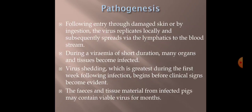Pathogenesis: following entry through damaged skin or ingestion — ingestion being the most important route — the virus replicates locally and subsequently spreads via lymphatics to the bloodstream. During a short viremia, many organs and tissues become infected. Virus shedding is greatest during the first week following infection and begins before clinical signs become evident. Feces and tissue material from infected pigs may contain viable virus for months.